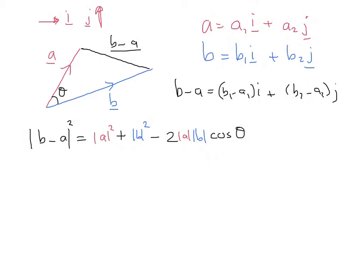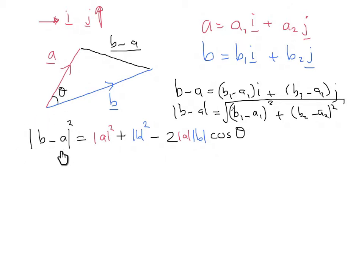So what would the length of that vector b minus a be? We just use Pythagoras — we go this squared plus this squared, square rooted. So that length would be the square root of (b1 minus a1) squared plus (b2 minus a2) squared. So if we want the length of b minus a, squared — which is the left-hand side of the cosine rule — that's going to equal (b1 minus a1) squared plus (b2 minus a2) squared, without the square root, because of the squaring.